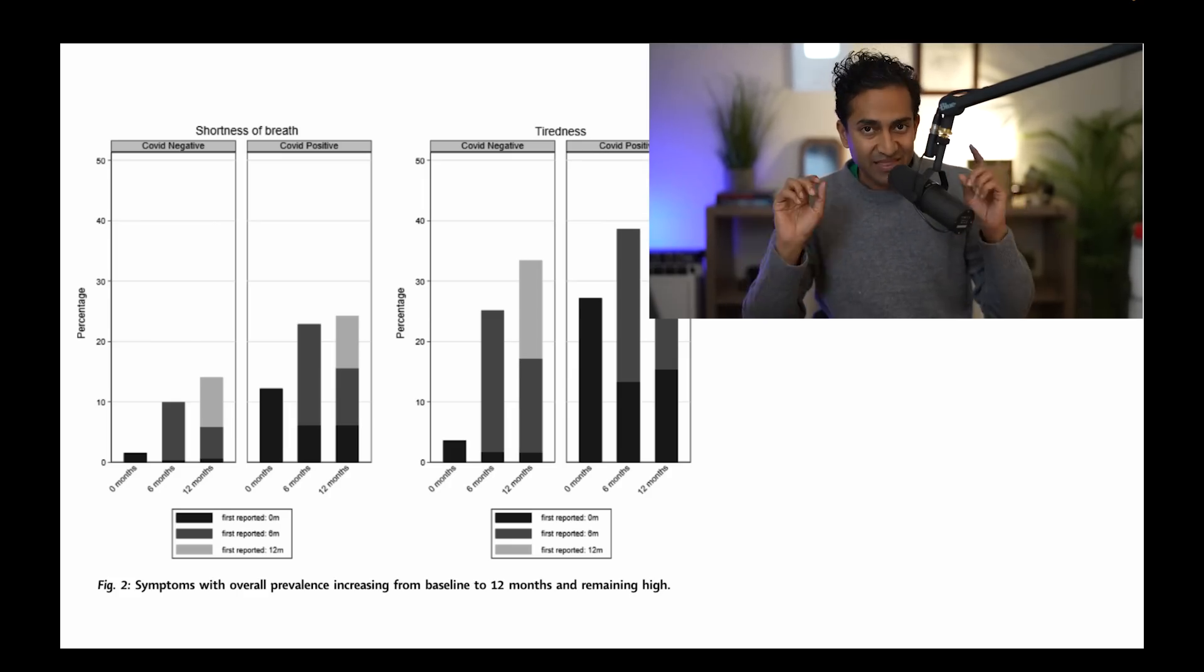So if you just think about it, everybody who has these symptoms is getting better. That's why the same color bar is getting smaller. And the reason the overall bar is getting bigger is that people who've never had symptoms are suddenly having symptoms. That's what they're trying to show you here.